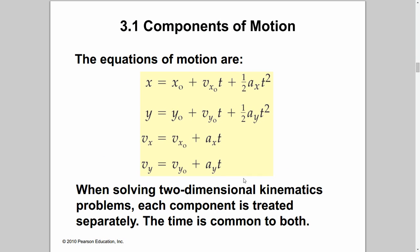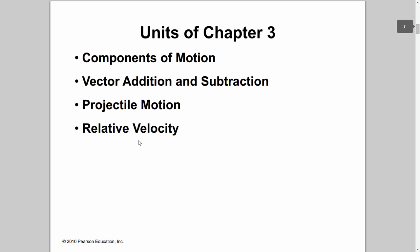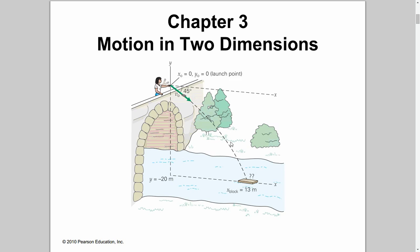The equations of motion in two dimensions are very similar to one dimension. x equals x-naught plus v-sub-x-naught times t plus one-half times acceleration in x times t squared. Similarly, y equals y-naught plus v-sub-y-naught times t plus one-half times acceleration in y times t squared. Time is common for both directions. If the rock takes four seconds to hit the target, the time is the same for the x direction and the y direction — time doesn't change.